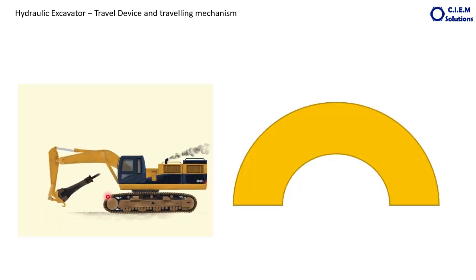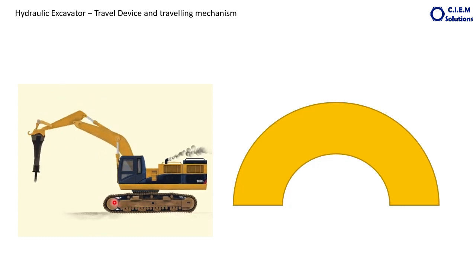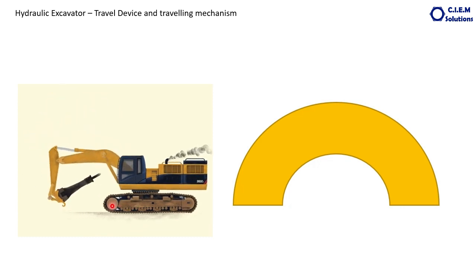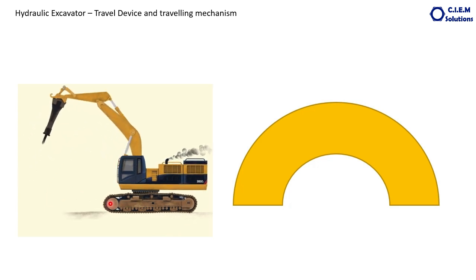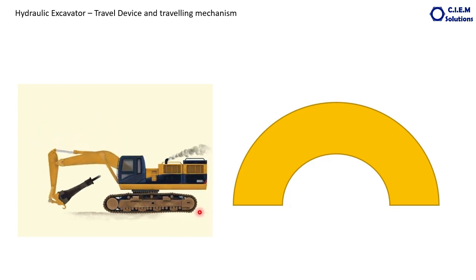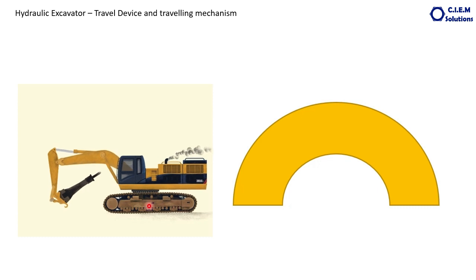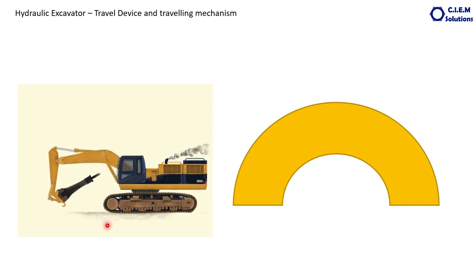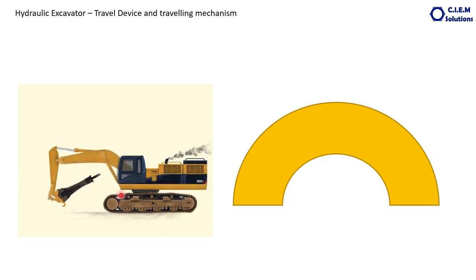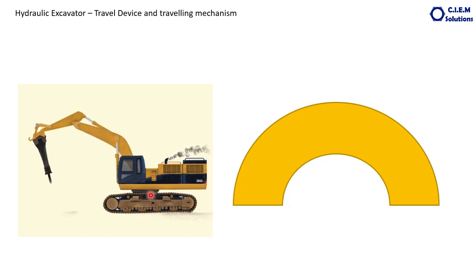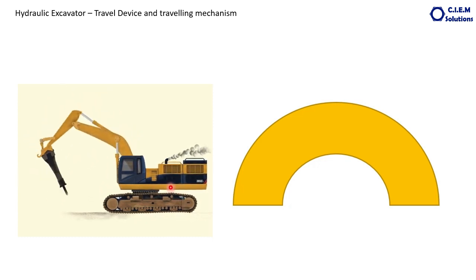This is how the track chain revolves. You can see this is the travel device. The travel device is supposed to be at the back side of the machine when the machine is traveling - this is just for understanding purposes, please ignore the location. This is the travel device rotating, and because of the travel device rotation, the track chain is moving and the machine is moving. It is moving in the straight direction.